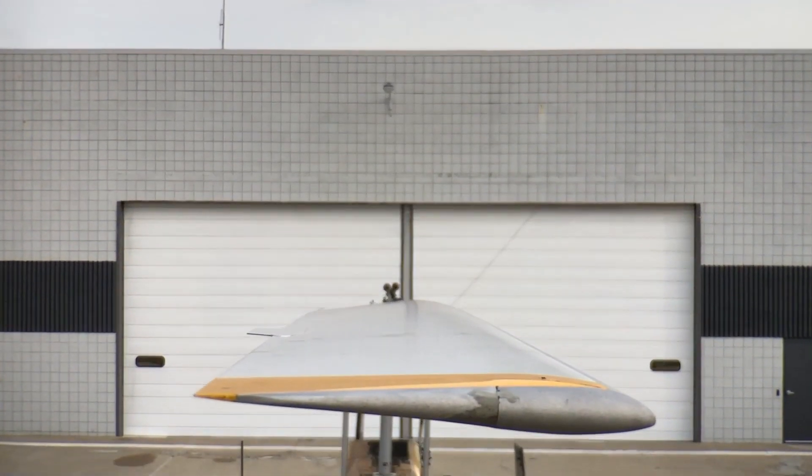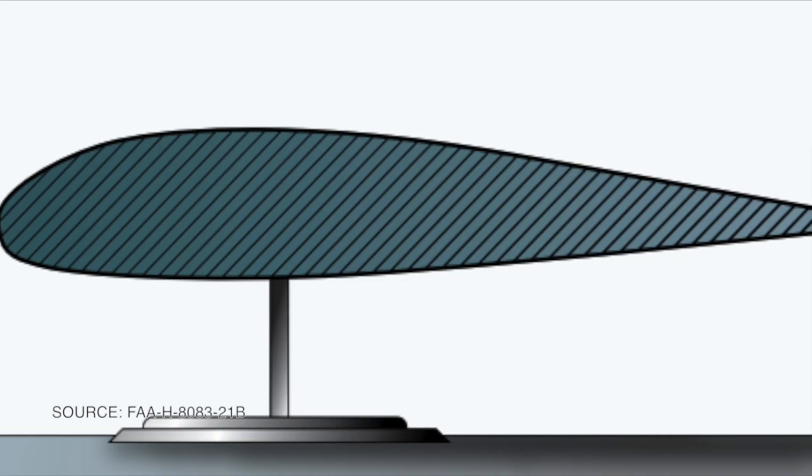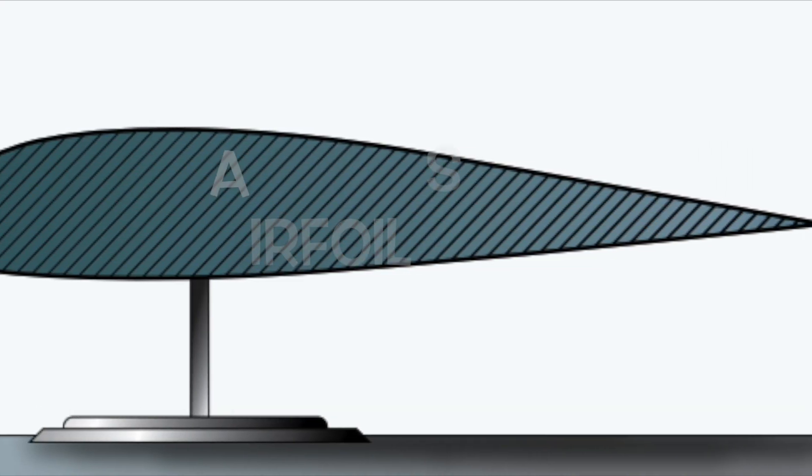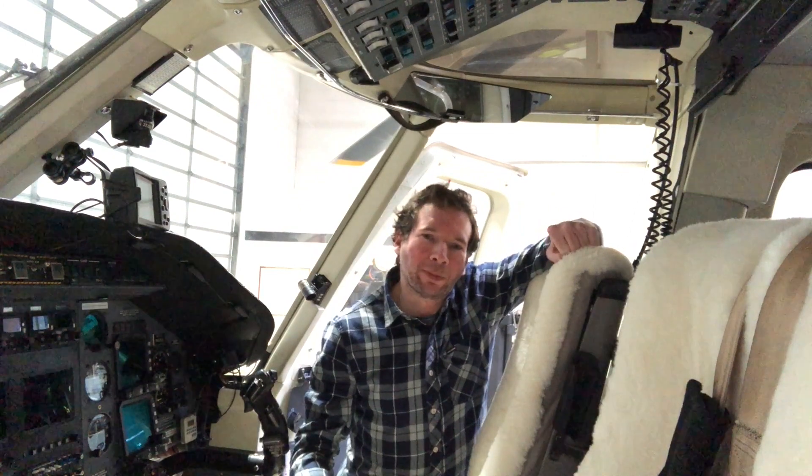As we said in episode one, each helicopter rotor blade is a tiny wing. A wing is a wing because of the shape of its profile, which we call an airfoil shape. We use this shape because it allows us to generate lift efficiently — meaning we create lift without creating a lot of drag.